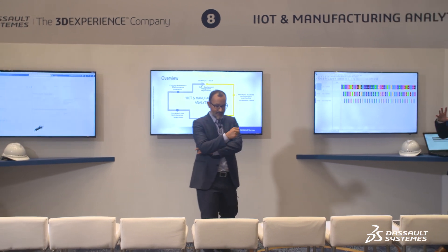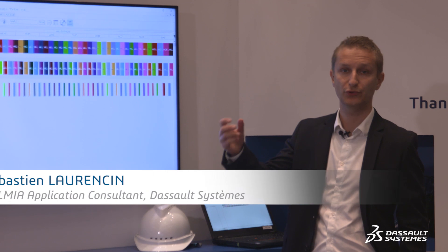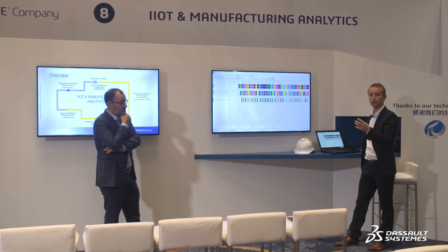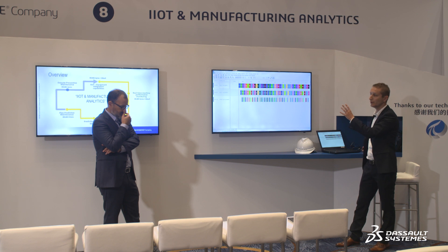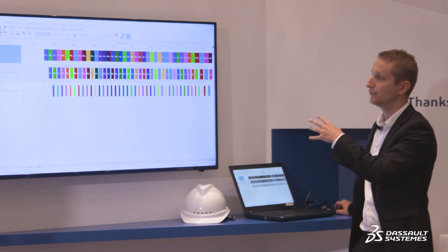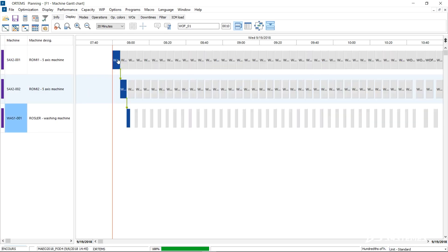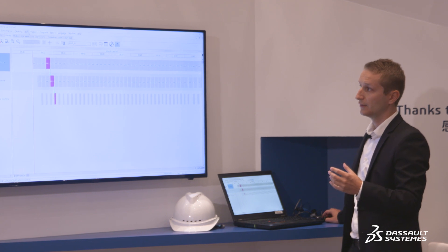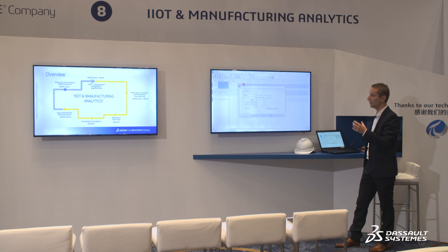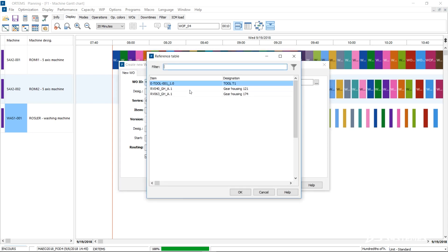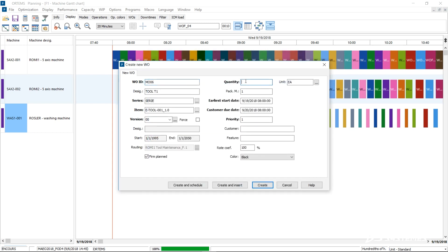The goal now is to include the maintenance order as predicted and requested. Here we are on the production plan of the factory — the fabrication work centers and machines. On the left part of the screen are the different machines, including the ROMI one, where we need to insert the maintenance order. On the main part of the screen, you have all the different operations and work orders on the Gantt chart. You can highlight them to see the different steps going through the machine and the process. Let's now create dynamically our maintenance order — I'll name it MO6, choose the T1 tool routing, do it once, and set it to blue.